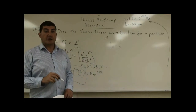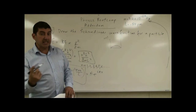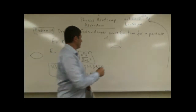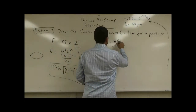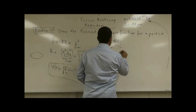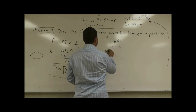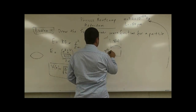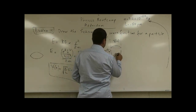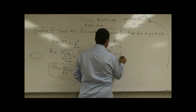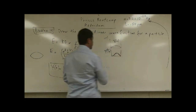If we want to graph the probability density function, this is psi of x. If we want to graph the probability density function, it'd be psi squared of x — the square of it.